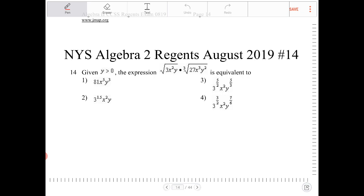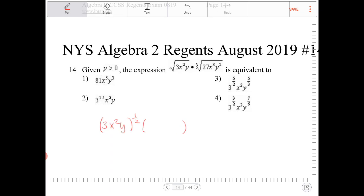The square root here written in exponential form is something raised to the power of one half. So I have 3x squared y to the one half. And this is multiplied by cube root is raising something to the one third power. So it's 27x to the third y squared to the one third.